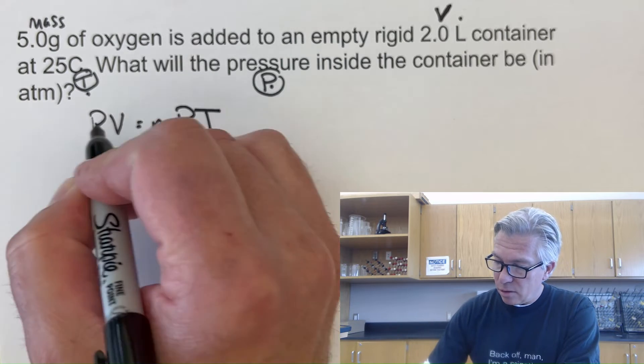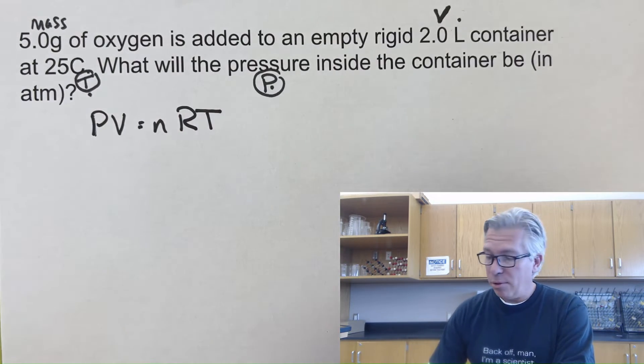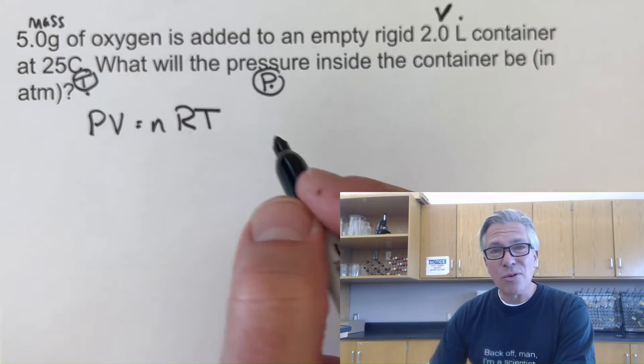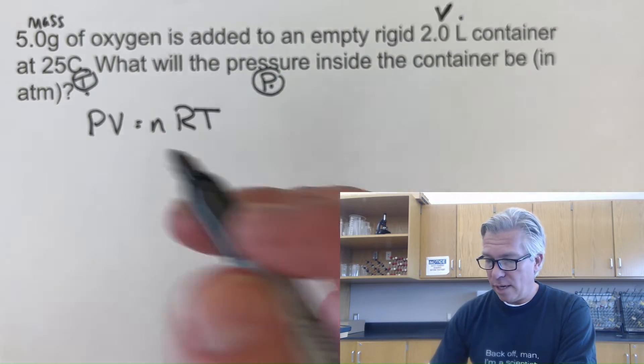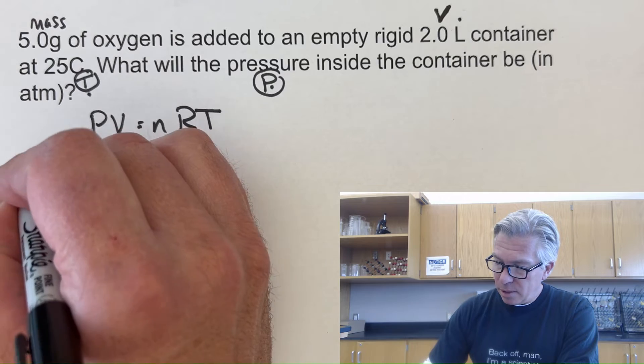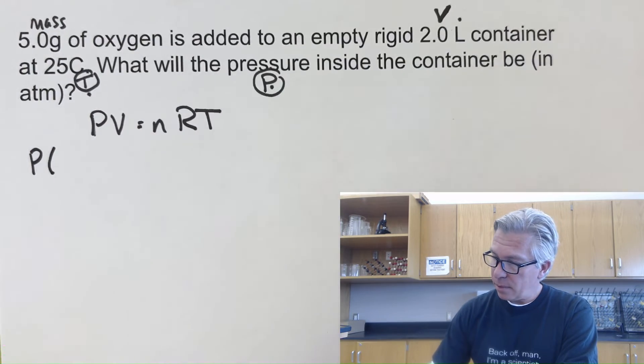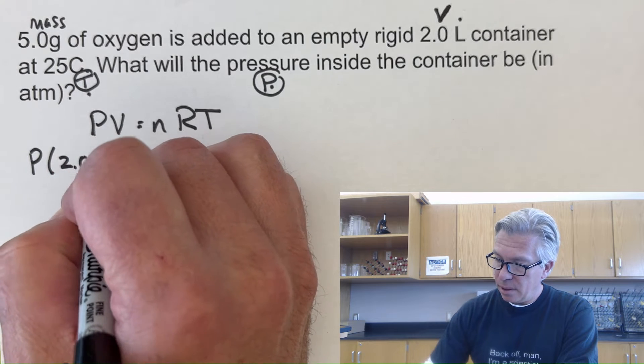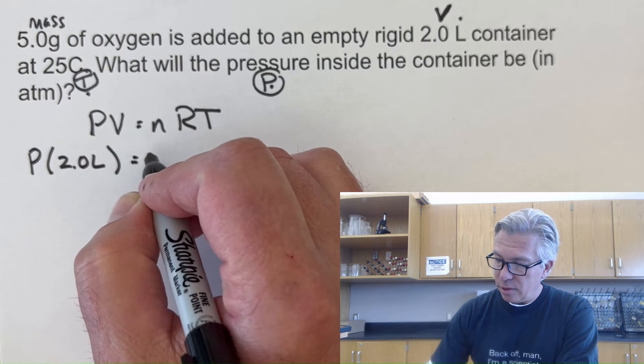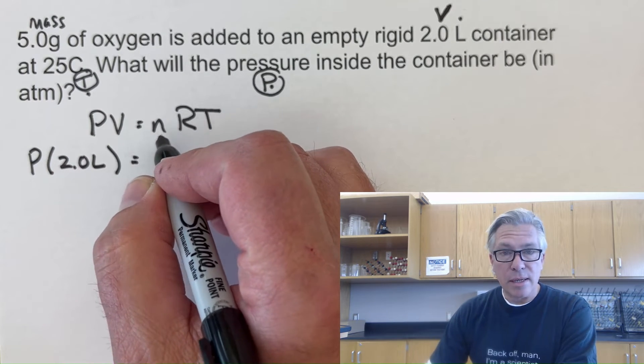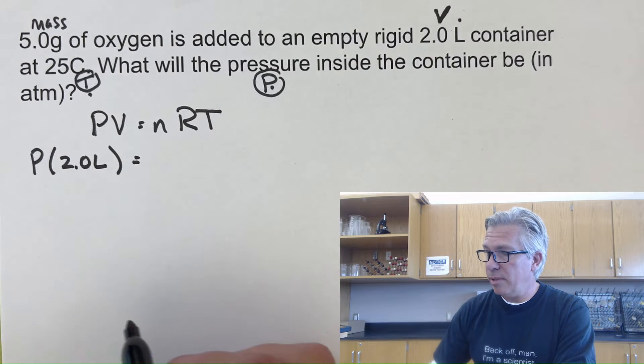I encourage you to make your grader very happy and put them in a good mood by showing them what formula you're going to be using. Write it down, then substitute in the things you know. I don't know what P is, so that's there. A 2 liter container. Make sure to put units. Now I need to know how many moles that is, so I'm just going to take a little side trip down here.